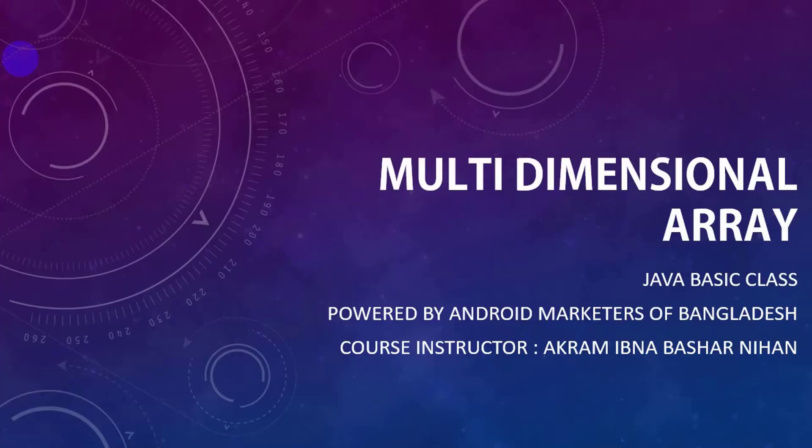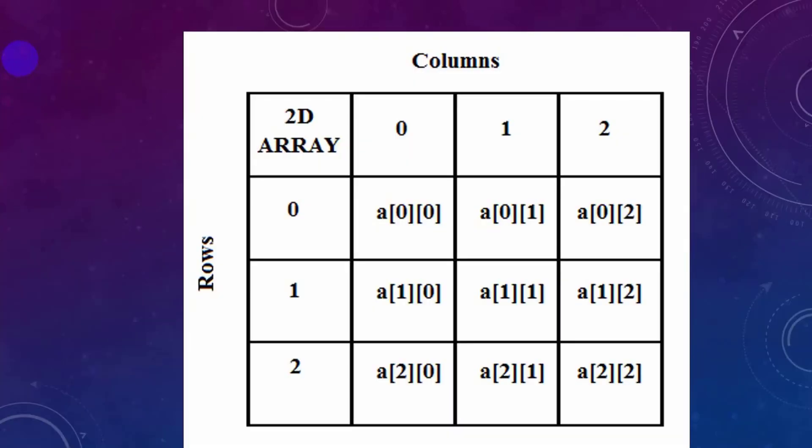Hi, how are you? In this video we will see a single array. The second is a multi-dimensional array. The single error is a multi-dimensional error. And the other error is a two-dimensional error. This error has a row and a column.